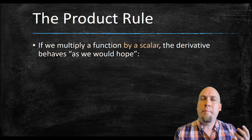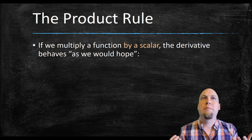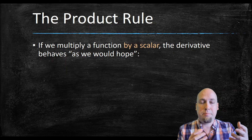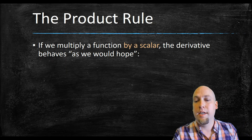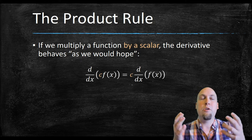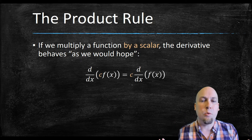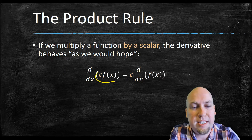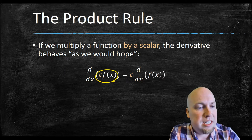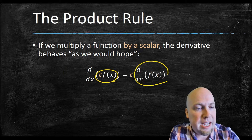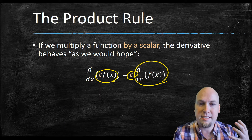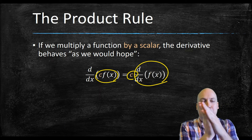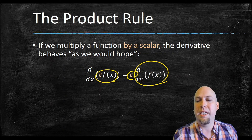Remember, we've already talked about what to do if you take a function you know and multiply it by a scalar. It turns out the derivatives just work out how you hope they would — if you want to take the derivative of a scalar times f, just take the derivative of f and then multiply by that scalar. You can pull the scalar outside of the derivative.